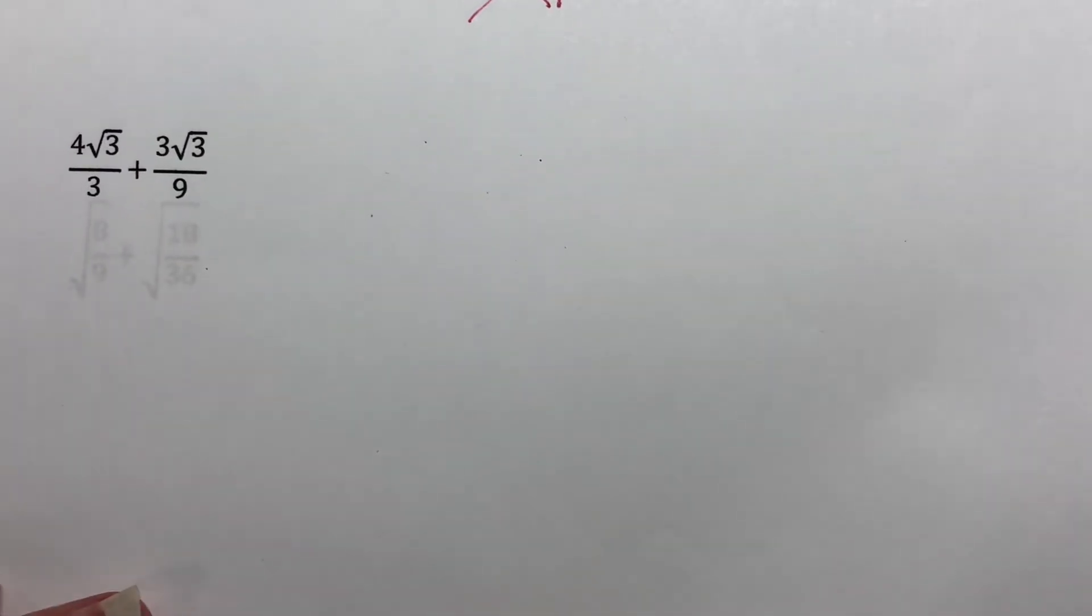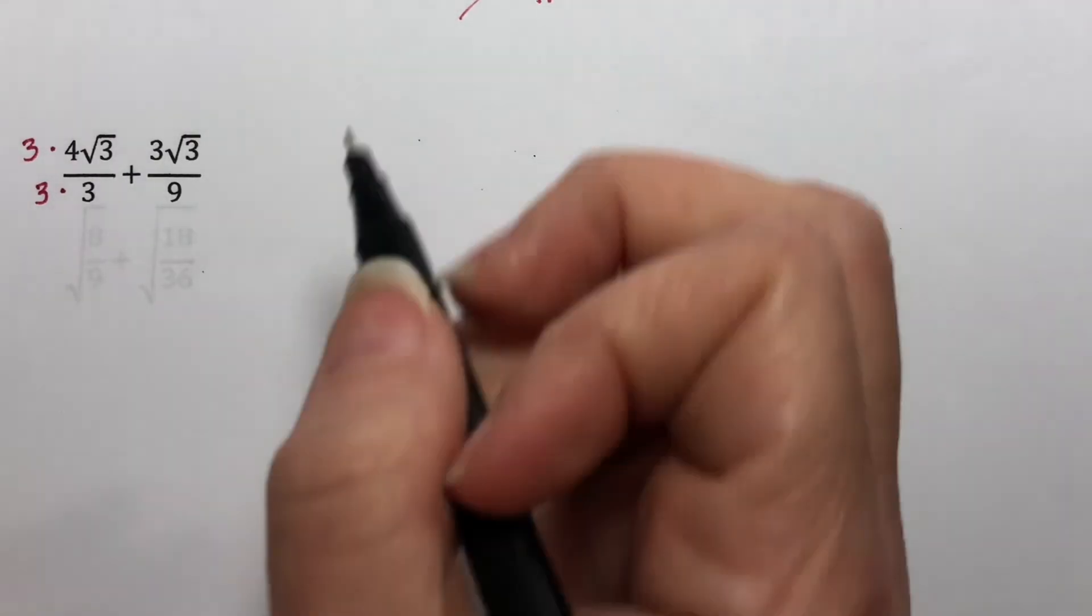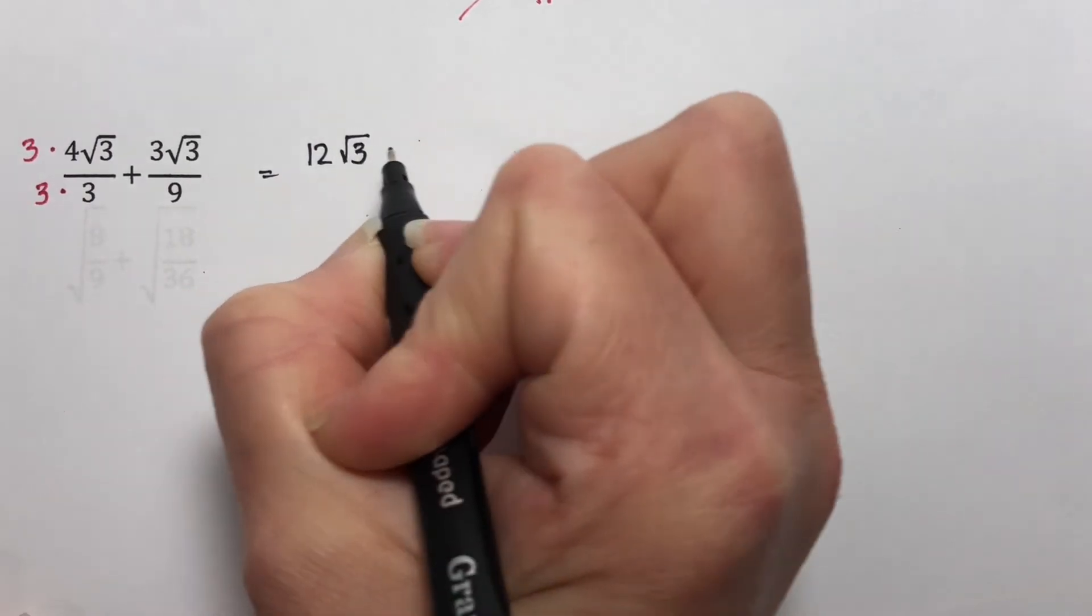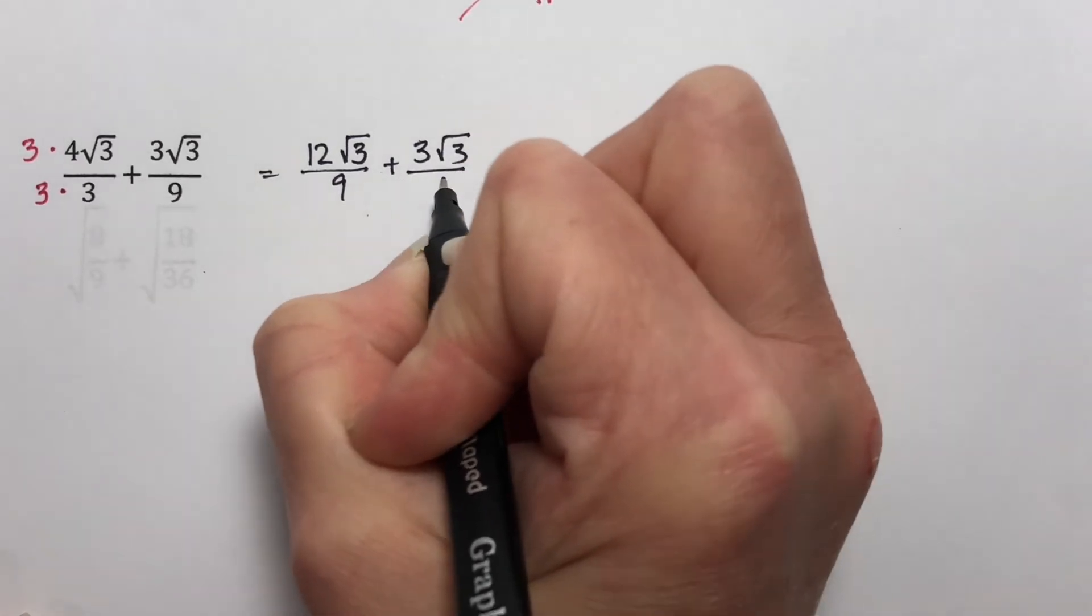So let's add 4 times the square root of 3 over 3 plus 3 times the square root of 3 over 9. Here I have to add fractions. And I have to remember all my fraction rules too. In order to add fractions, we need a common denominator. And I can easily change this 3 into a 9 by multiplying this by a 3. So I multiply this by a 3 as well. So this becomes 12 times the square root of 3 over 9 plus 3 times the square root of 3 over 9.